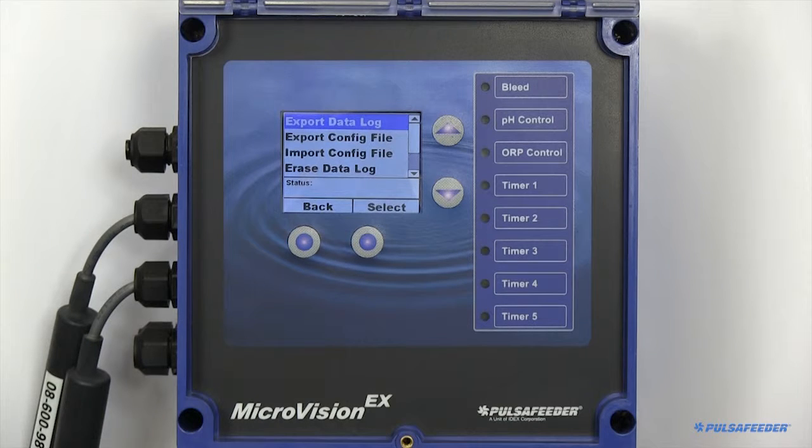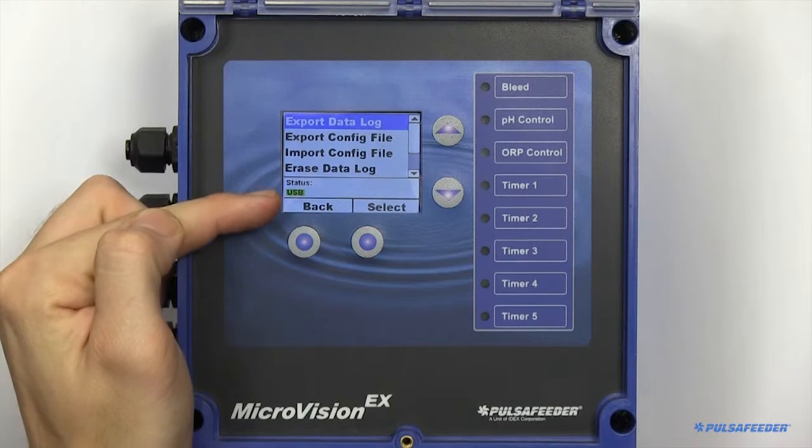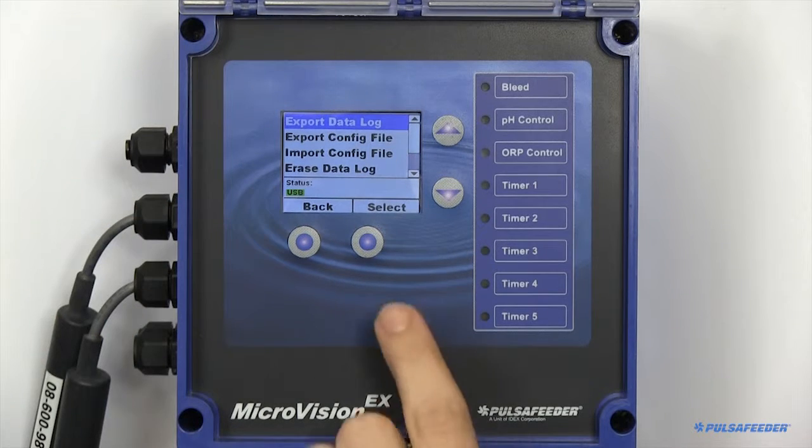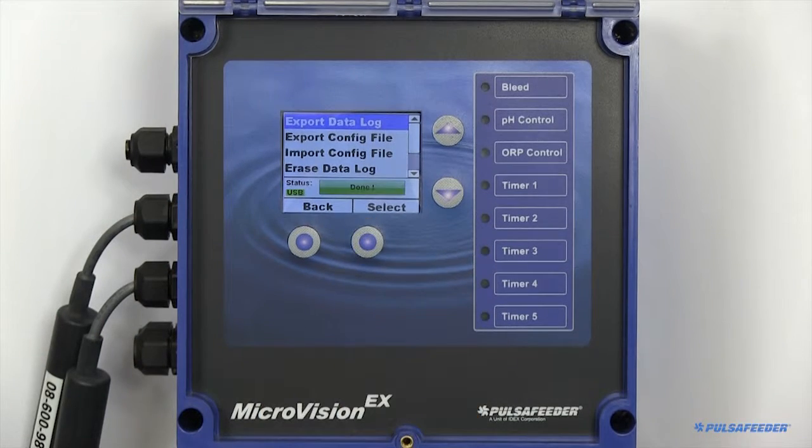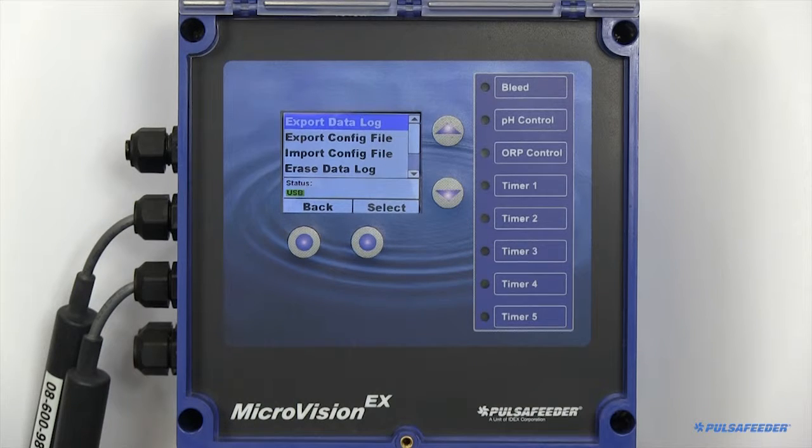To use the USB functionality, insert a thumb drive into the provided port. You should see USB display in the bottom left of the screen. You can now import and export files. A graphing tool is provided on our website to graph the data log export files. This will allow for fast digestion of the tower's functionality since your last visit.